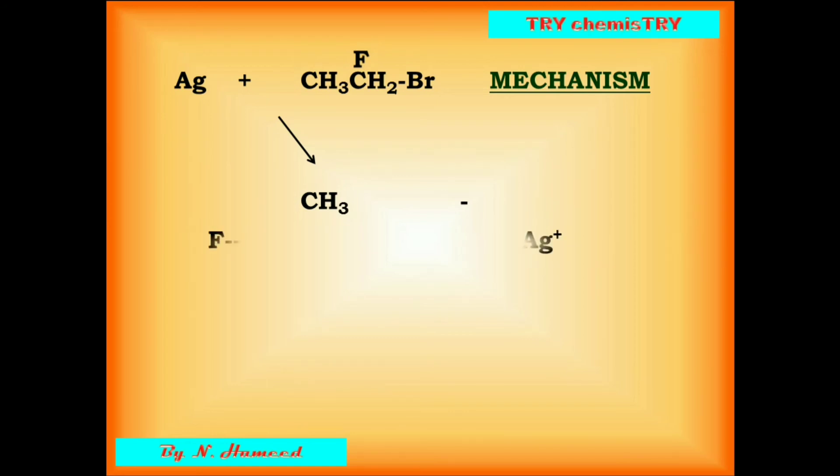When nucleophile attacks the alpha carbon, the carbon acts as a substrate. So the fluorine is not completely bonded with the carbon. At the same time, the bromine is not completely cleaved from the carbon. It is the transition state.